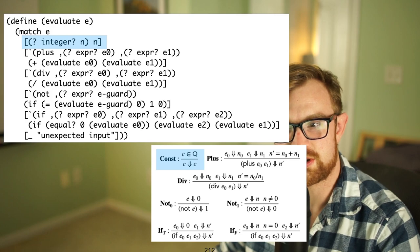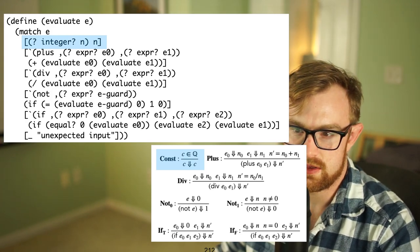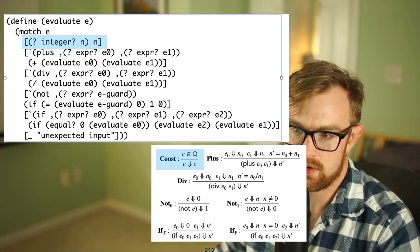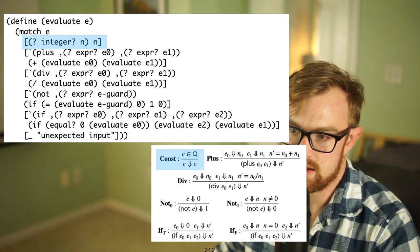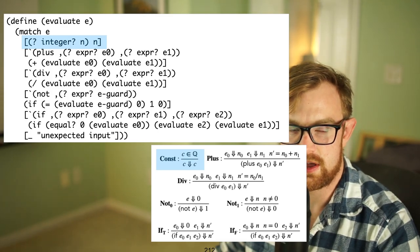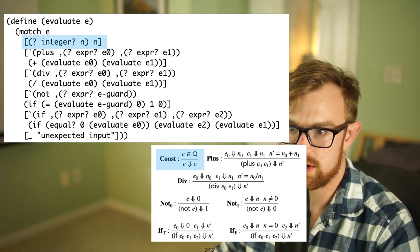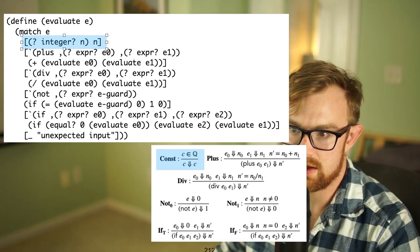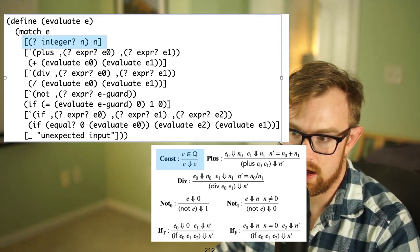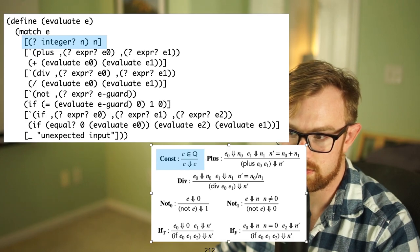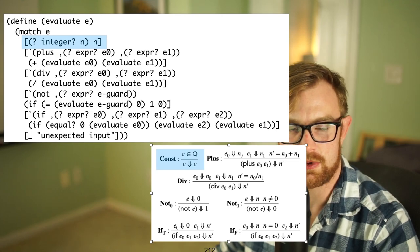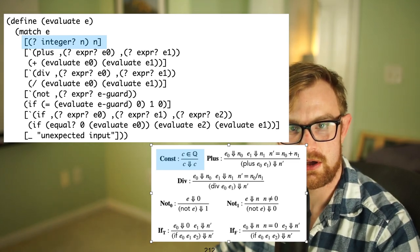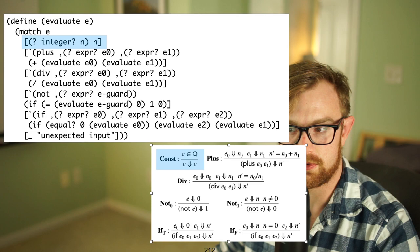One thing we observed in our last lecture was that the big step evaluator for the if-arith language has a nice correspondence with the actual natural deduction rules. Every different case in the evaluator has some corresponding rule that it maps to in the natural deduction semantics. So if we're looking to implement the math and think about keeping them in sync, that's one thing that's really powerful.